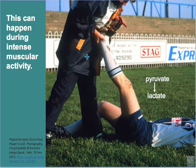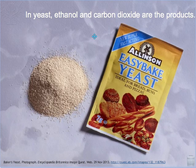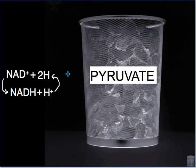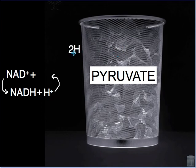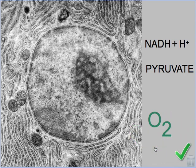In muscle tissue, pyruvate produces lactate, and in yeast pyruvate produces ethanol and carbon dioxide. We can say that pyruvate is the final acceptor — the molecule that cleans everything up and disposes of the hydrogens so that NAD+ can be regenerated. But if oxygen is present, then the fate of pyruvate and the reduced NAD is completely different: they are able to enter the mitochondrion and participate in the Krebs cycle and the electron transfer system, leading to the production of a significantly higher amount of ATP — and this is the subject of our next lesson.